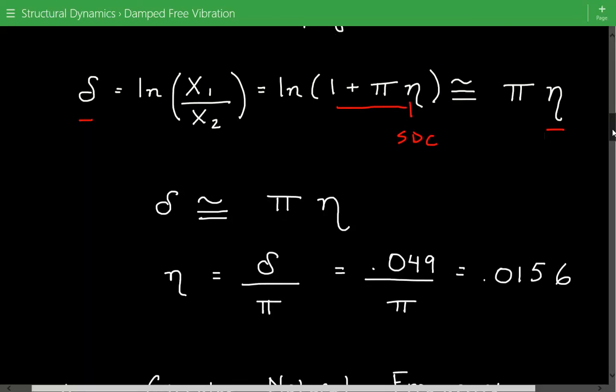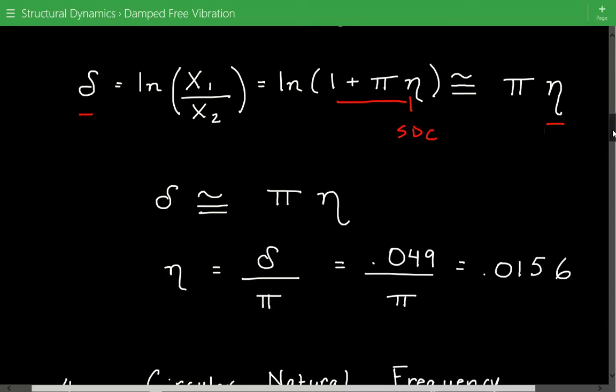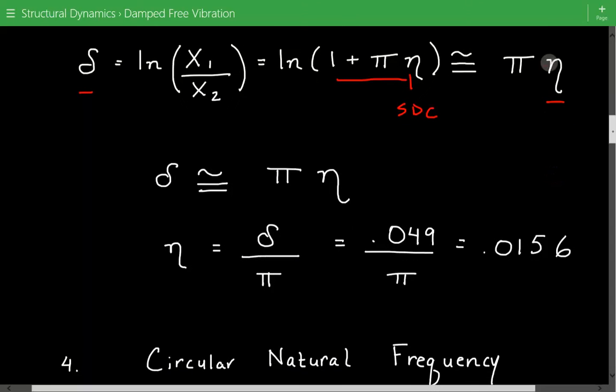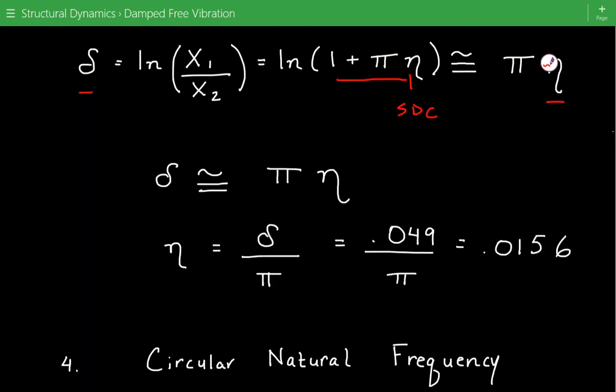Based on this relationship we can solve for the structural damping coefficient. It's equal to delta divided by pi and that's equal to 0.0156. That's our structural damping coefficient value.